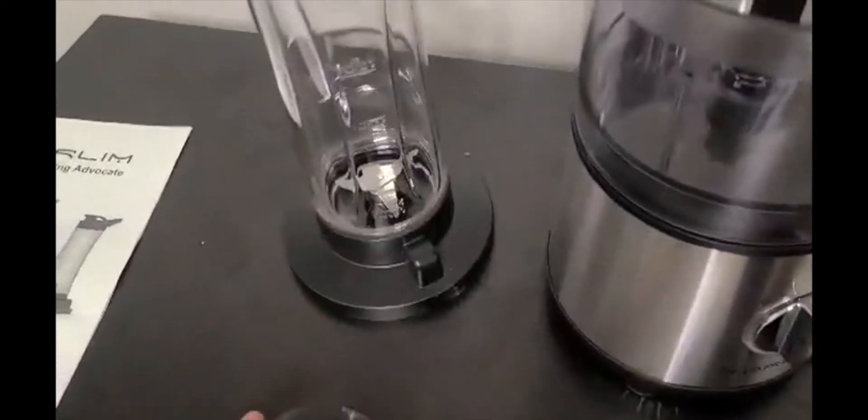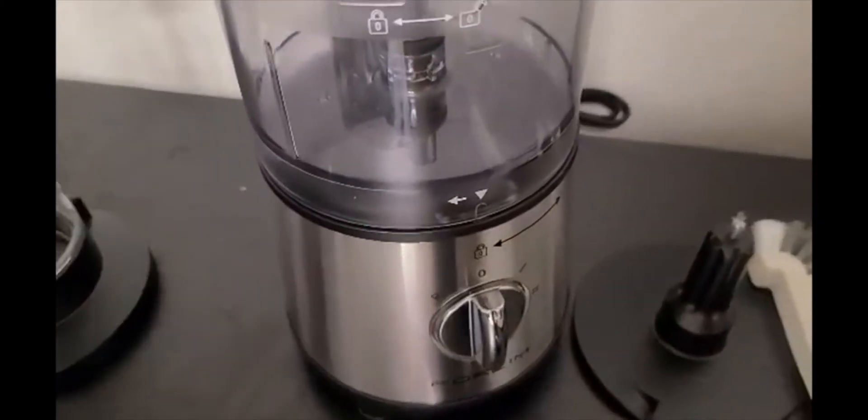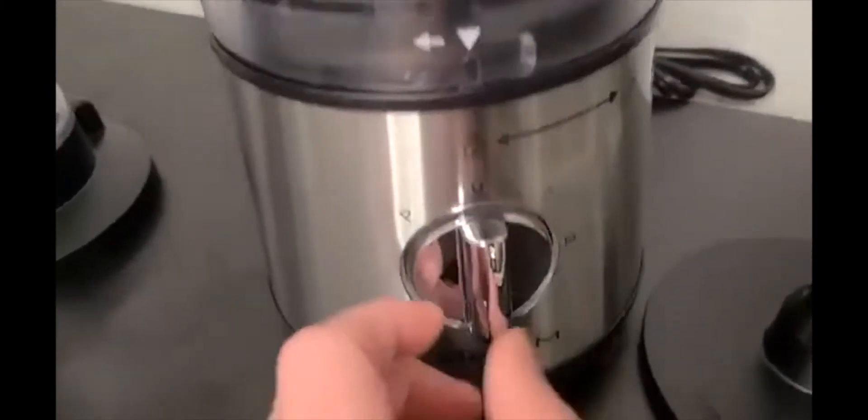It has a lid for the little bottle here so you can make a smoothie or protein shake and take that on the go with your travel lid. The food processor itself is really simple.